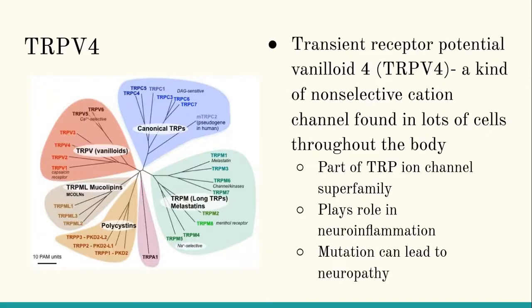TRP-V4 — transient receptor potential vanilloid-4 — is a non-selective cation channel found in lots of cells throughout the body, including glial cells. It is part of the TRP ion channel superfamily, and it plays a role in neuroinflammation. Mutation of it can lead to neuropathy, so it's very tied into neurological function within the body of humans and mice.